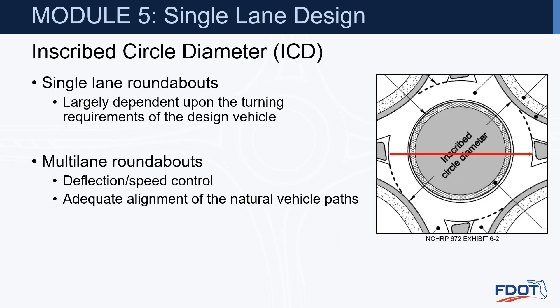Talking about size, we'll start with the inscribed circle diameter, or ICD. On single lane roundabouts, the size is largely going to be dependent upon the turning requirements of the design vehicle, in addition to being able to control the entry speeds — our fastest path. For the most part, the larger the design vehicle, the larger circle you're going to need.